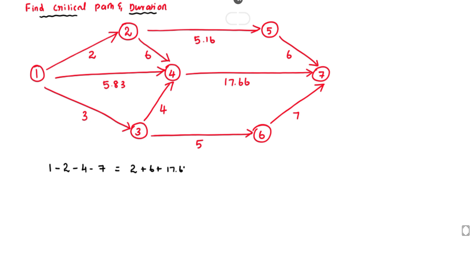The next path is 1→2→5→7. The corresponding duration is 2 plus 5.16 plus 6, giving a total value of 13.16.